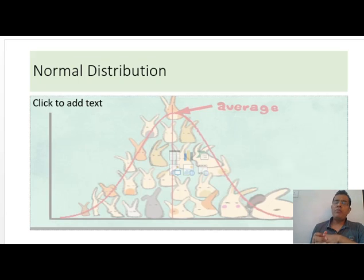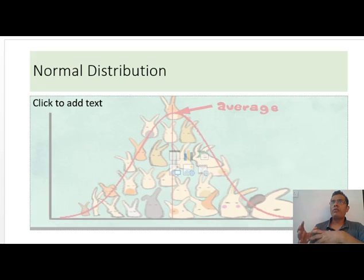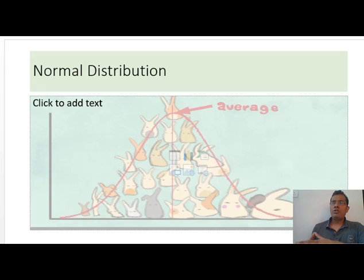Normally many people don't know about the Jarque-Bera test and they are also not aware of the properties of normal distribution. People think there is only one property — that it should be symmetric around the mean, or that mean should equal median equal mode. But actually there are six properties of normal distribution. Before conducting the JB test, let's discuss those properties and then we'll see how to conduct a JB test in Python.